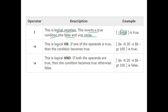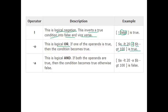Next we have the logical OR operator. We use the OR operator in between two conditions. In the first condition we are comparing: dollar-a is less than 20, or dollar-b is greater than 100. If one of the conditions is true, it is going to return true, because we are using the OR operator in between.